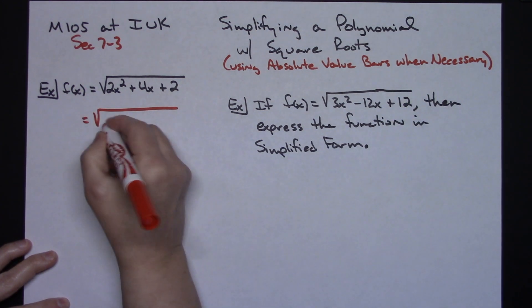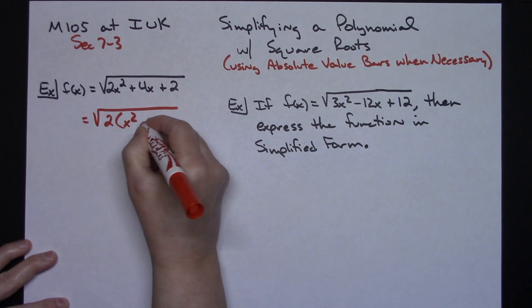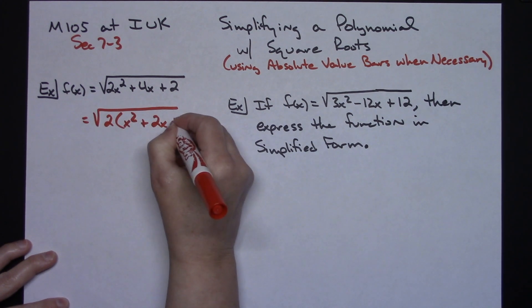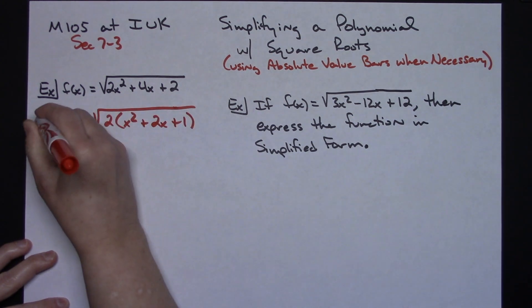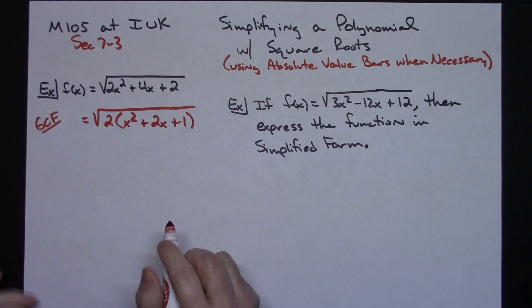So I'm going to have the square root of, take out that greatest common factor of 2. I'm going to have an x squared plus 2x plus 1. If you can take out GCF, take out GCF.